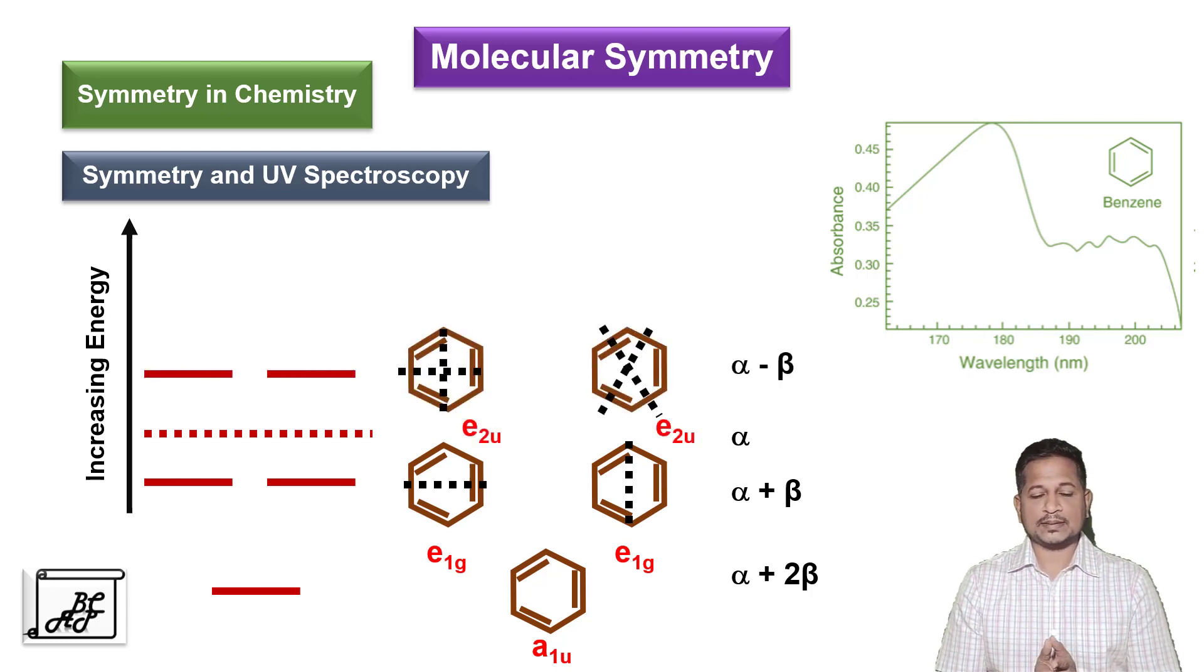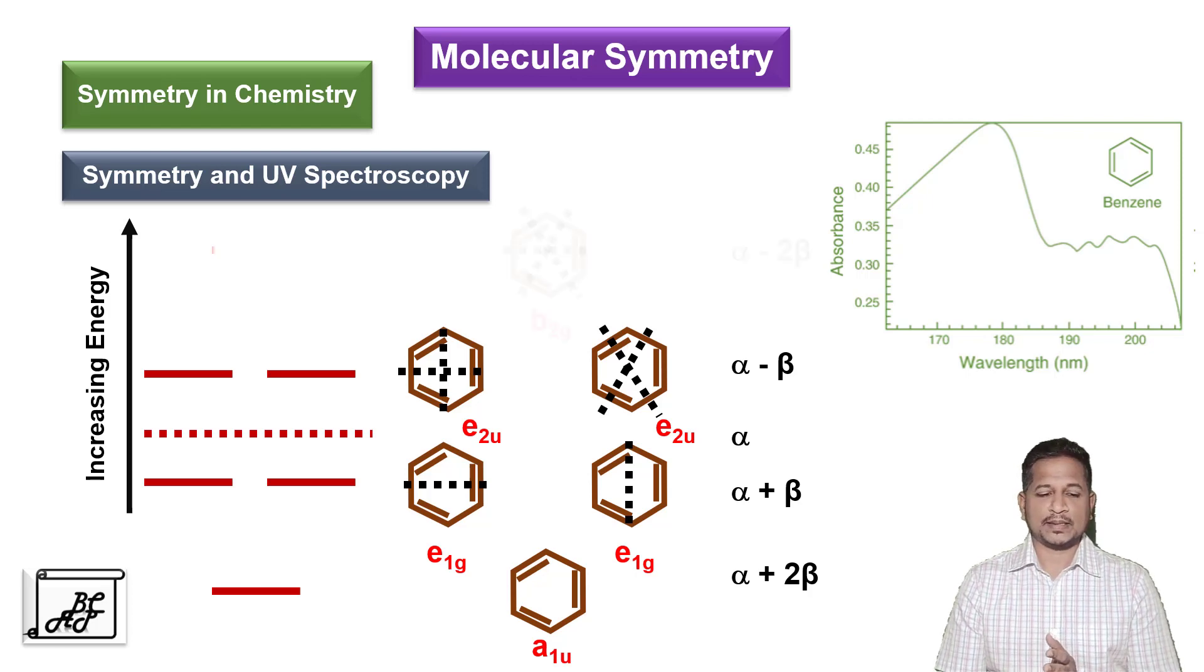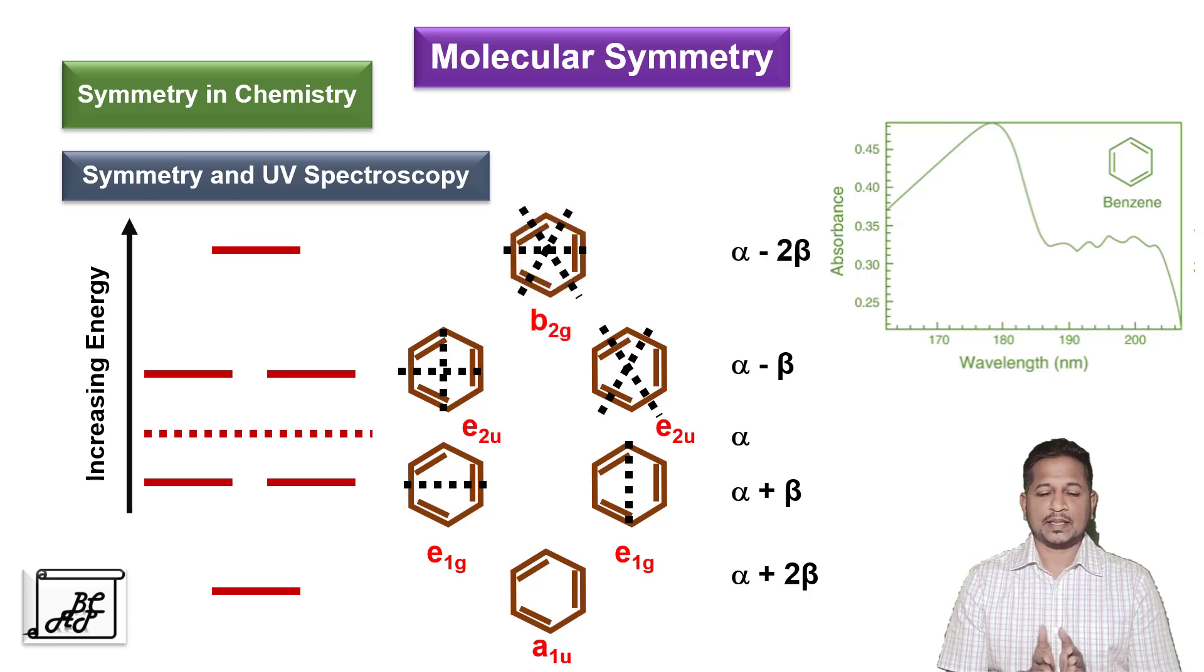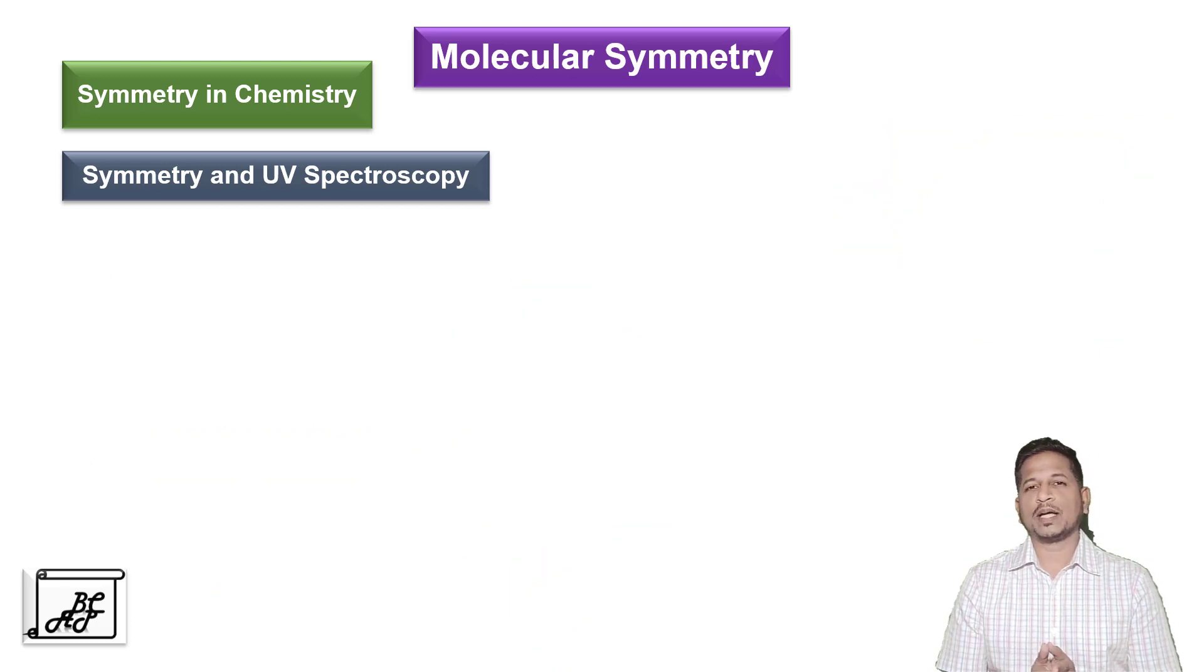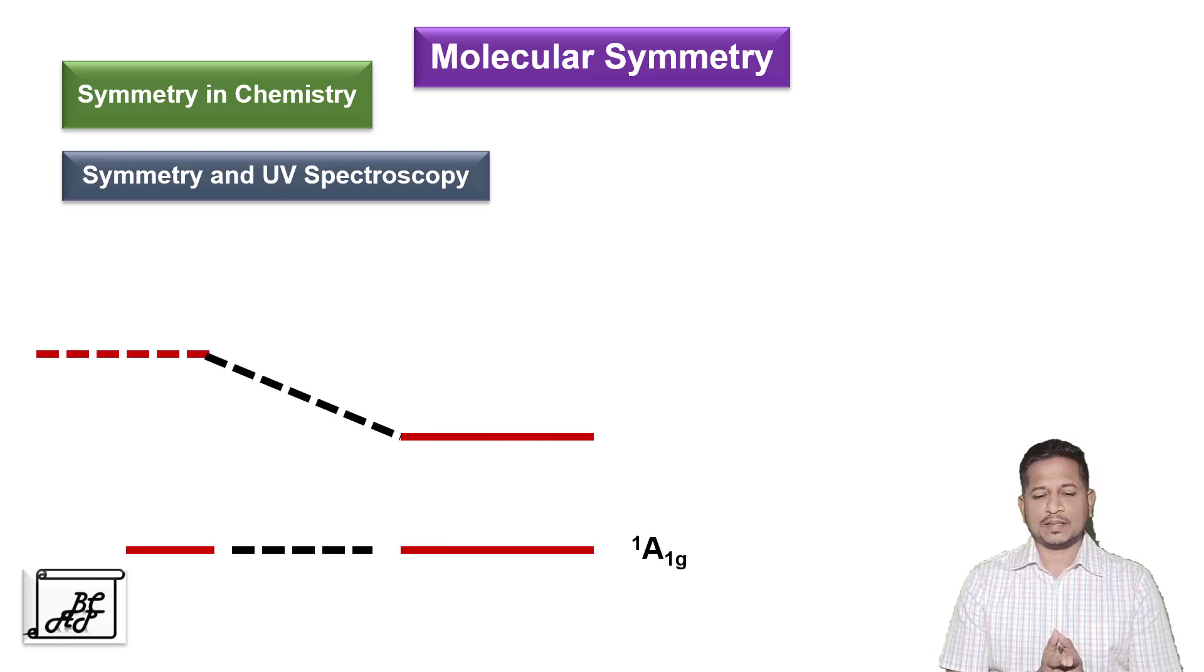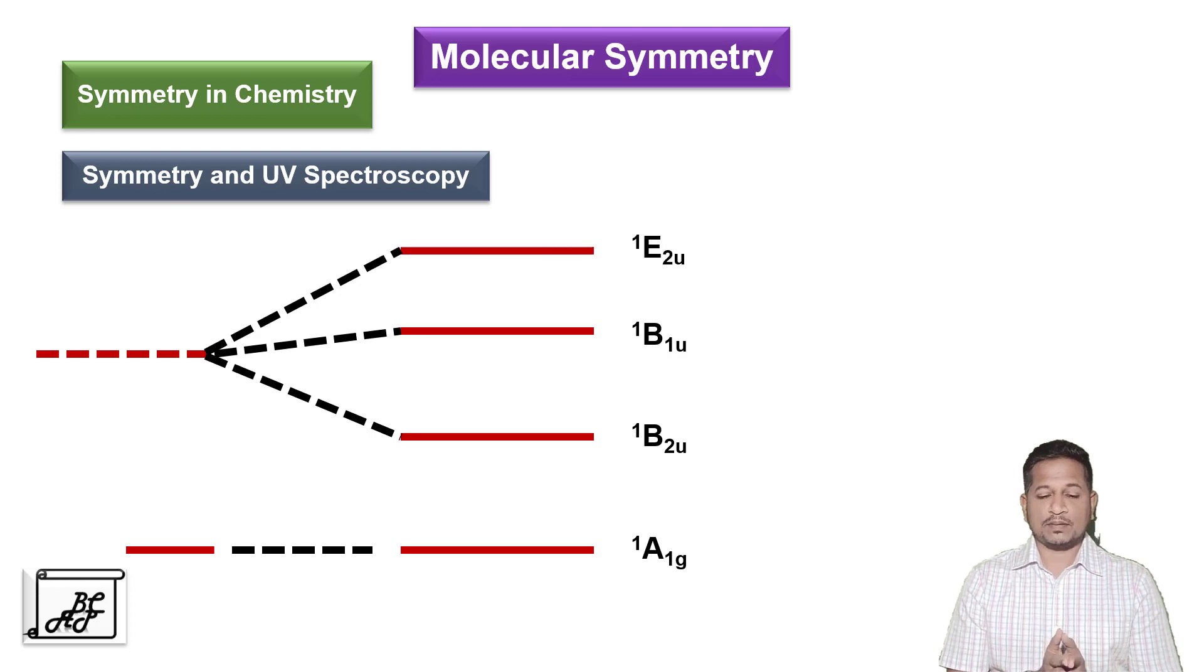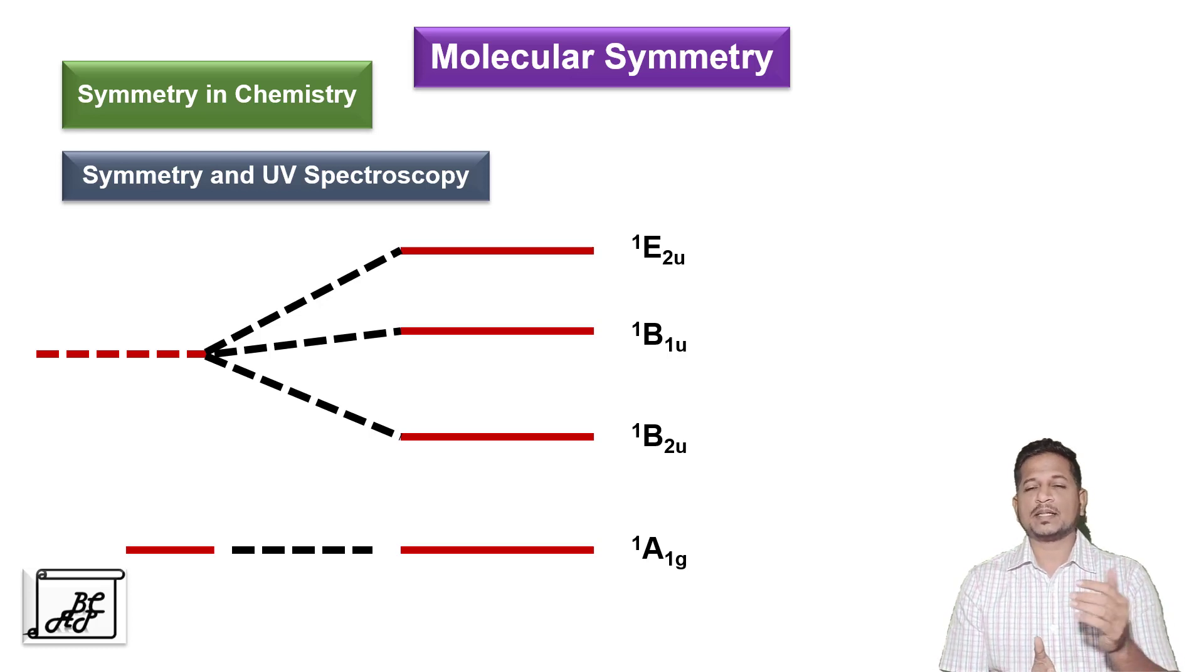And finally, the last excited state consists of three nodes termed as B2G. Now when we draw an energy level diagram, it consists of four energy levels: 1A1G, 1B2U, 1B1U, and 1E2U. So, as there are three excited states, total three transitions are possible.